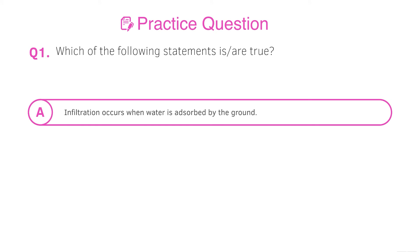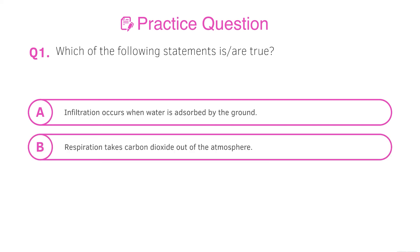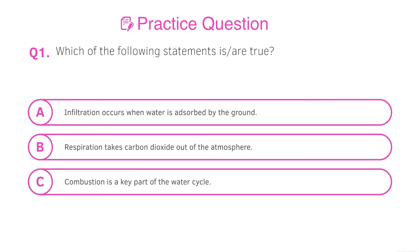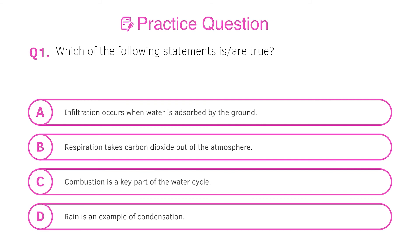Now let's have a look at a practice question. So I'll read through the statements, you can then pause the video, have a go and we'll go through the answers. So A, infiltration occurs when water is absorbed by the ground. B, respiration takes carbon dioxide out of the atmosphere. C, combustion is a key part of the water cycle. And D, rain is an example of condensation. So pause the video, have a go and then we'll go through the answers.